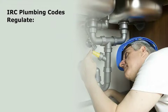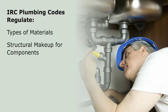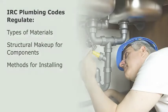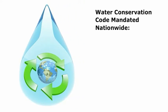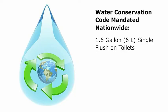IRC plumbing codes regulate the types of materials and structural makeup for components used in the house plumbing system and the methods for installing them. Although some codes may vary by area of the country, one water conservation code that has been mandated nationwide in the United States is the 1.6 gallon or 6 liter single flush on toilets.